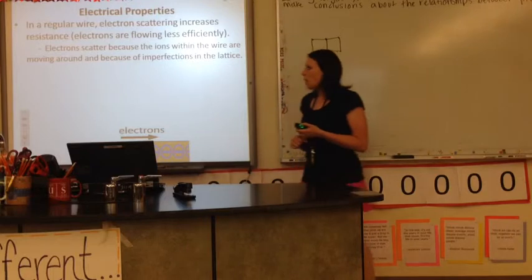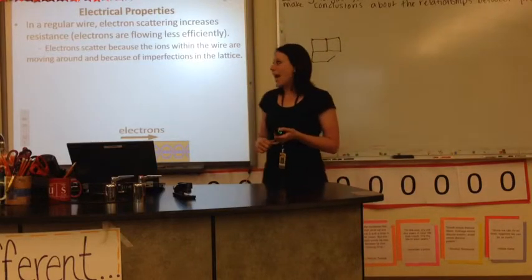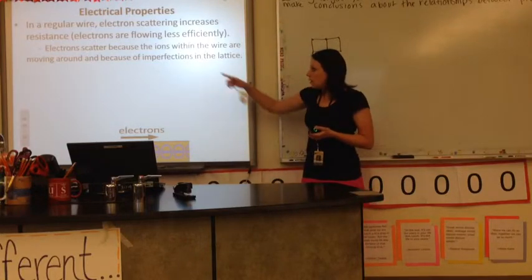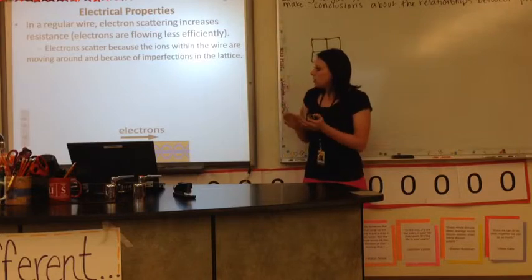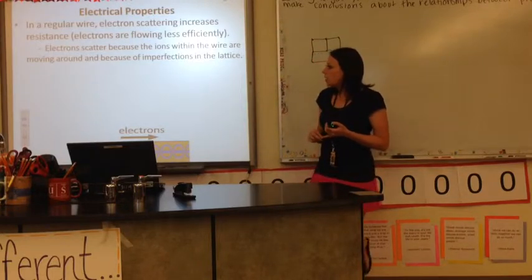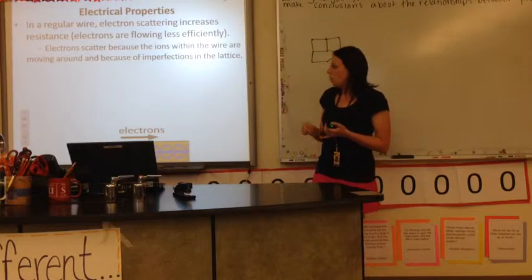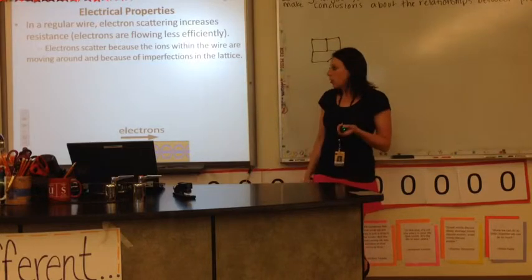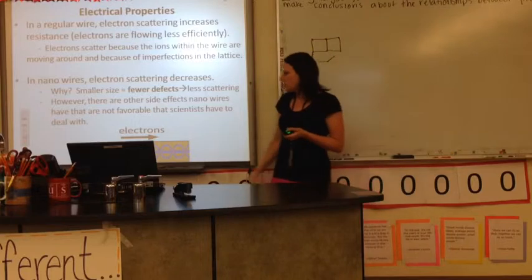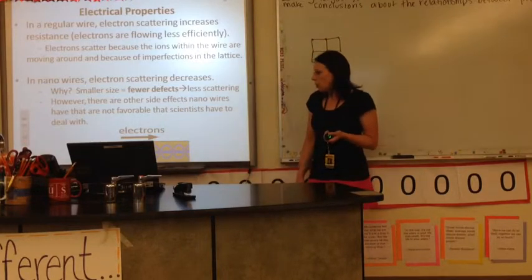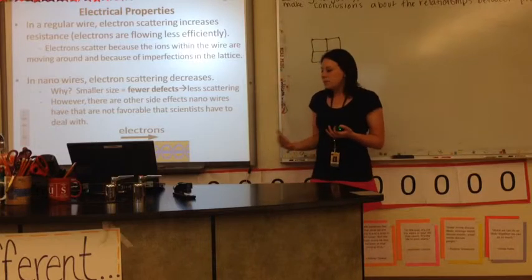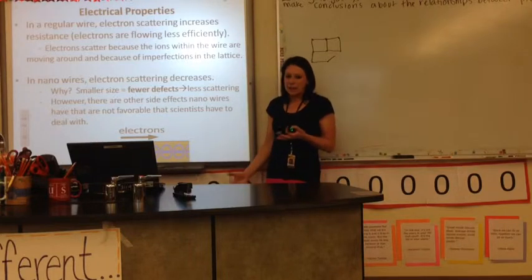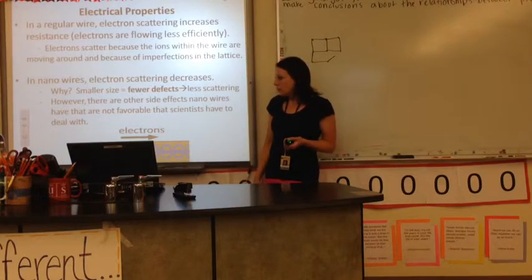Electrical properties. In a regular wire, something called electron scattering increases. Electrons are flowing less efficiently. So as you get smaller and smaller, this kind of changes. And the electrons scatter because the ions within the wire are moving around because of these imperfections. But, like I was saying earlier, when the wire gets smaller, there aren't these imperfections anymore. So because of the fewer defects, less scattering occurs. And there are other side effects that are not as desirable. But it's interesting that these wires act differently. And so they can have different uses.